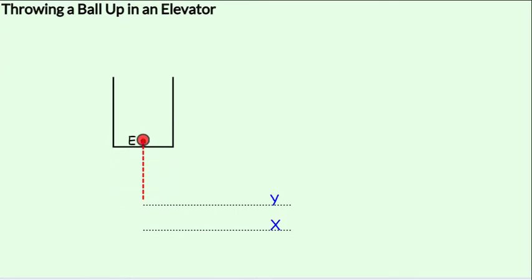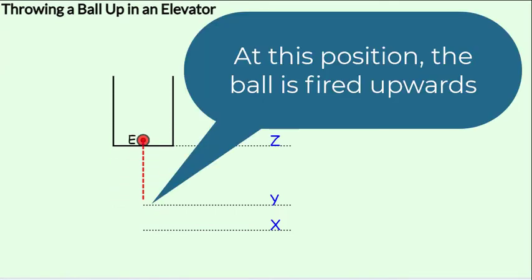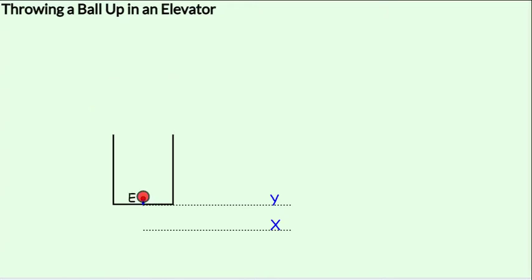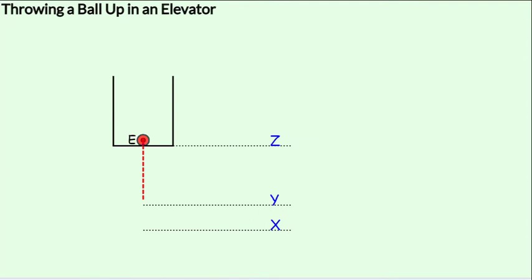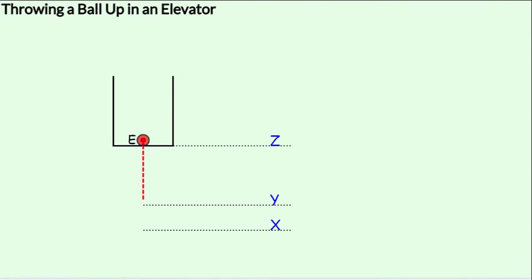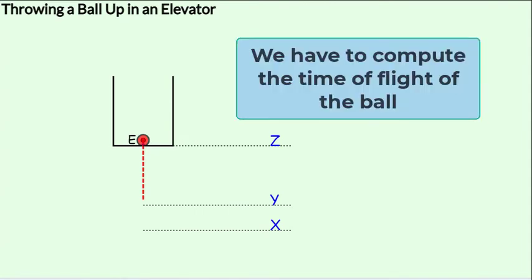At position Y, the red ball is fired upwards. Meanwhile, the elevator continues rising with an acceleration of a. The ball reaches the top of its flight and on the way back down, it would meet the floor of the elevator which is rising upwards. In this lesson, we will learn how to determine the time of flight of the ball in an accelerating elevator.